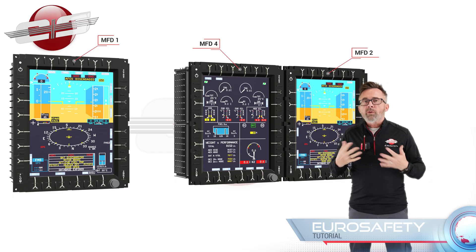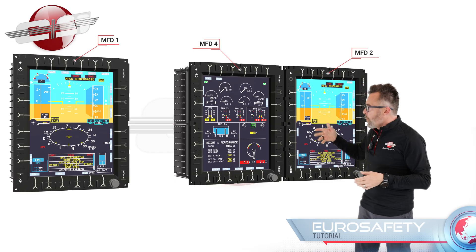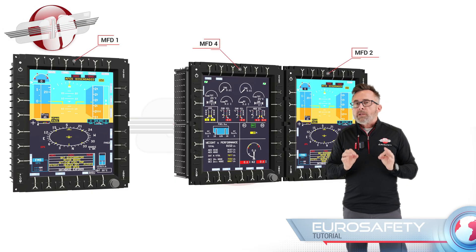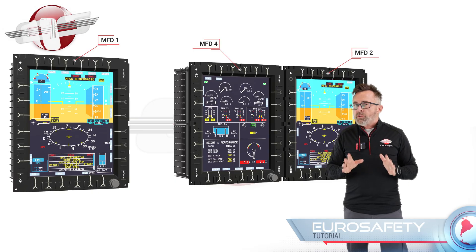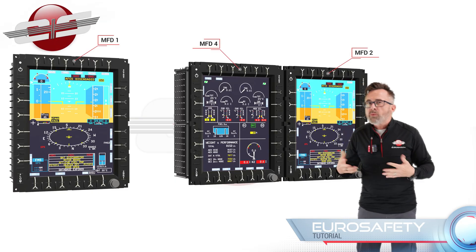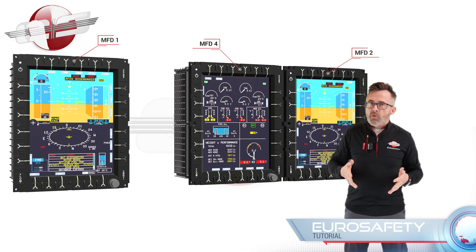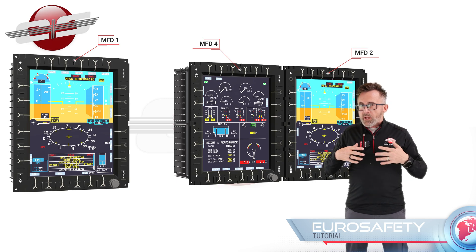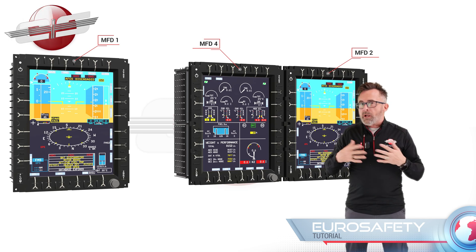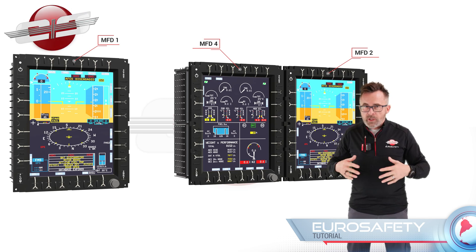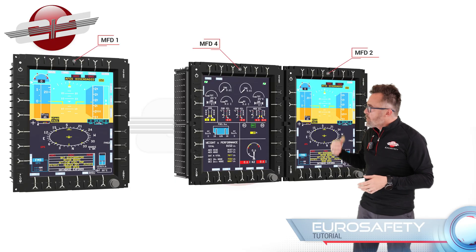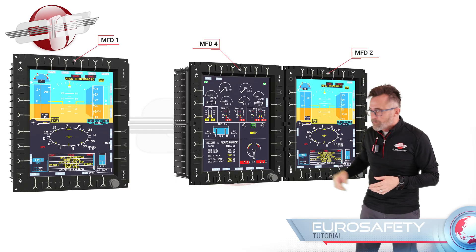Now, I know what you're thinking — where's three? Airbus decided not to name the middle screen three, because the system uses three for the logic cross-check between the channels in the Helionics computers. And that could cause confusion, so they just used four.